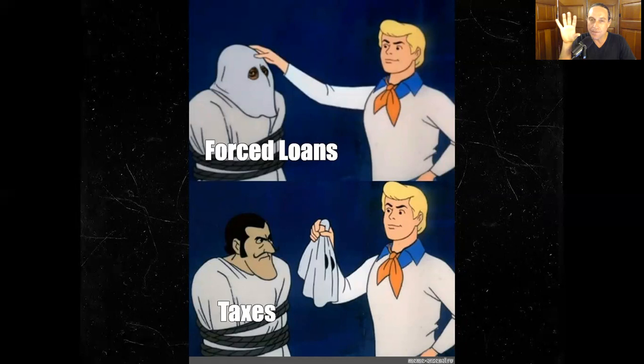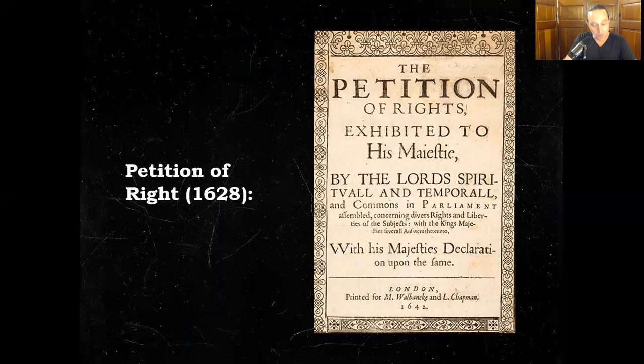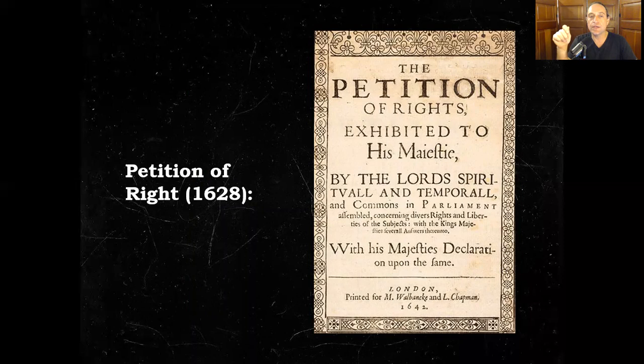The American Founding Fathers will study this period very closely. Charles needs money — these forced loans are not enough — so he calls Parliament back. Parliament agrees to give him money, but he has to agree to something: he has to agree to the Petition of Right.